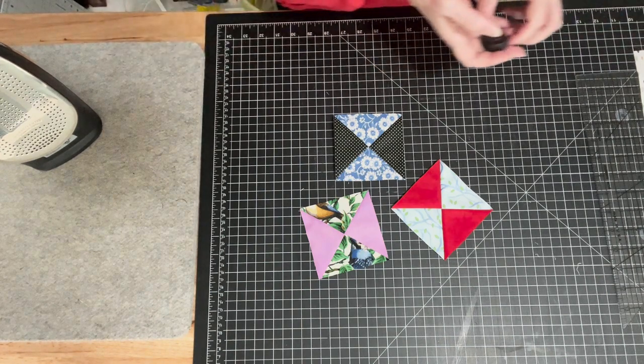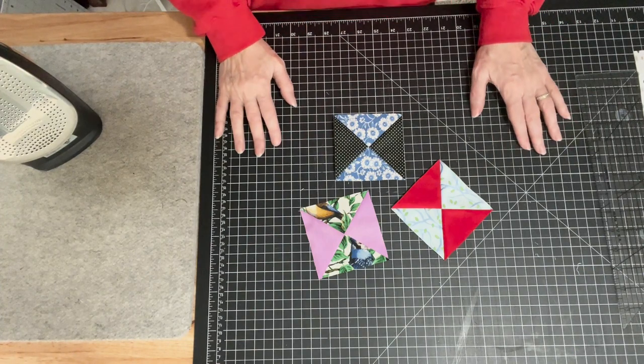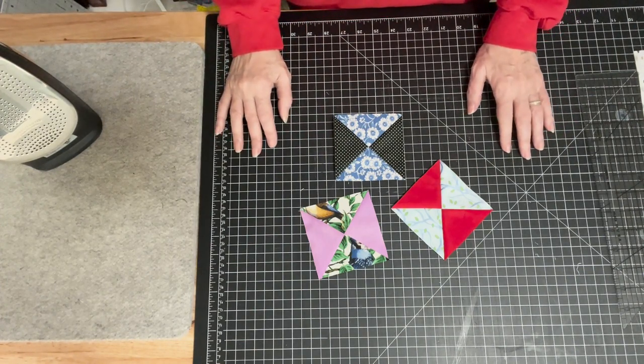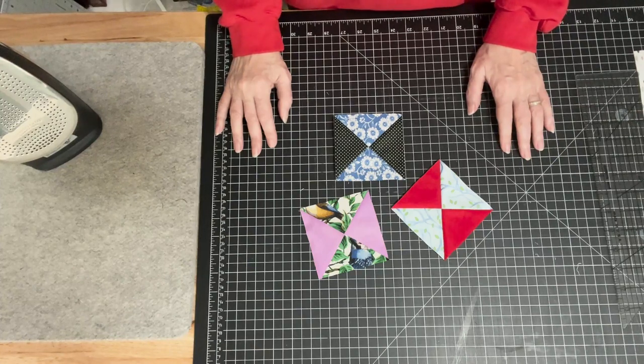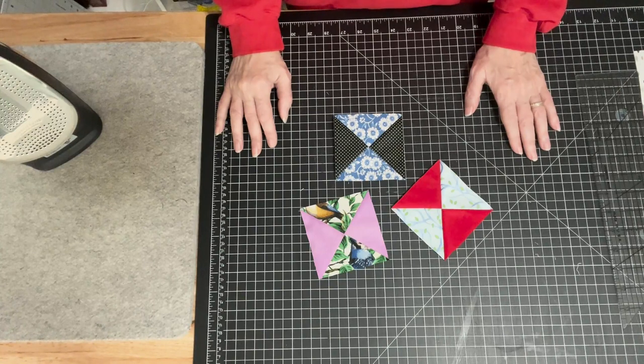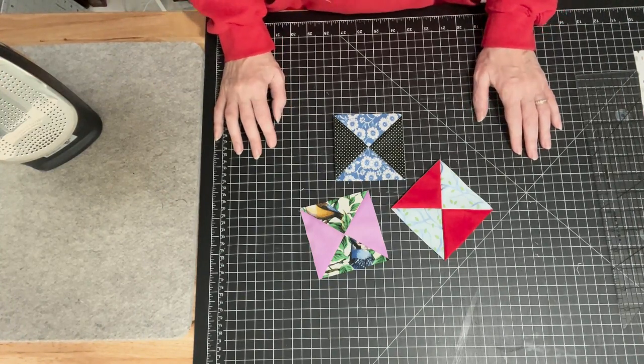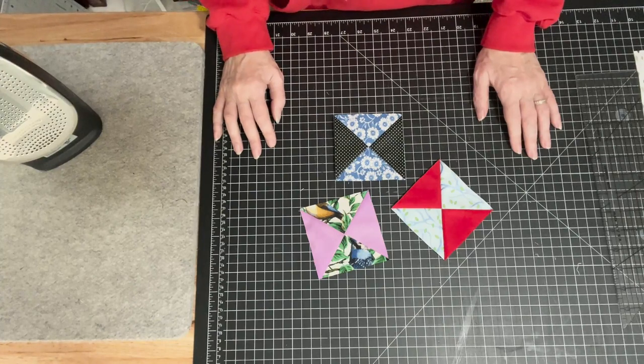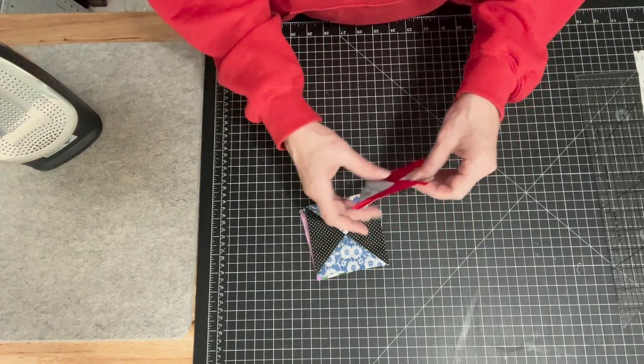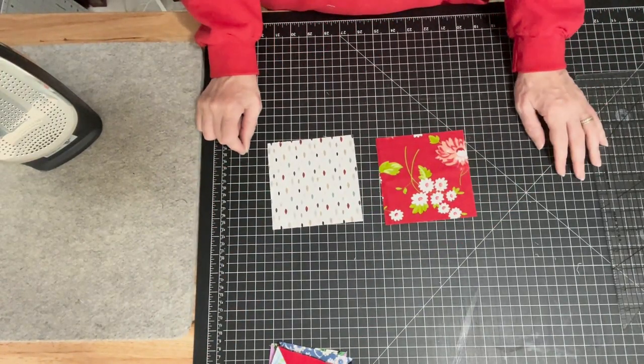Let's get started on this hourglass block. It's one of the basic blocks of quilting, but it makes a stunning quilt. I'm going to make a quilt with these hourglass blocks all done in various scraps. The only key to make it stunning is that you need one light and one dark so you have good contrast.